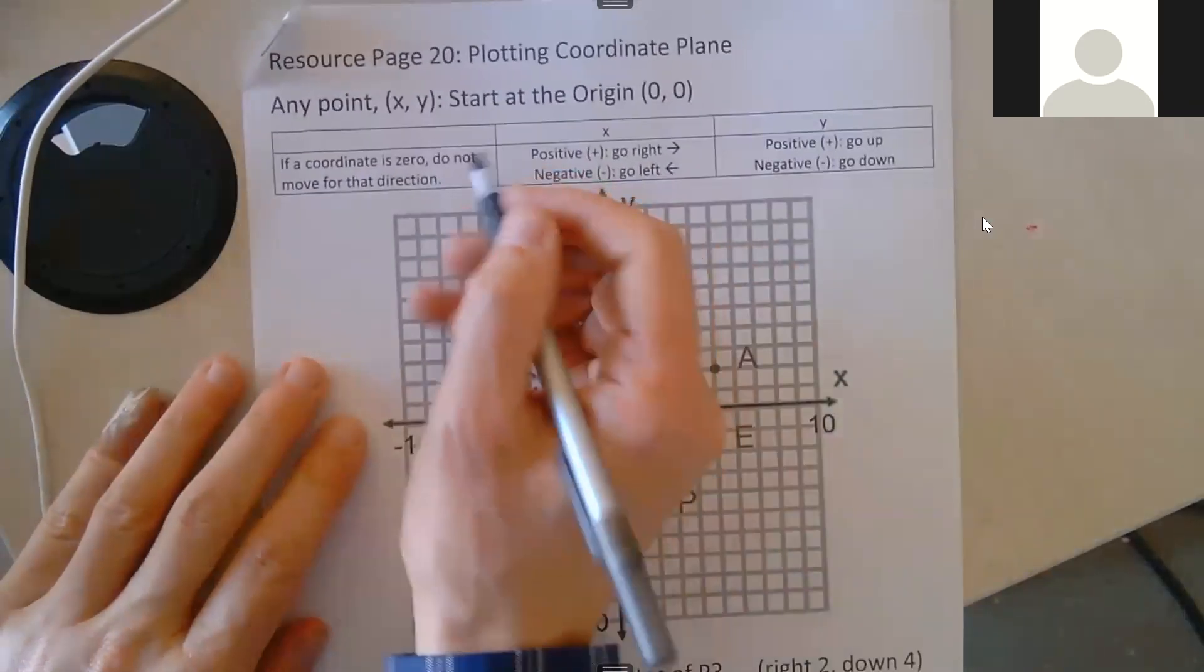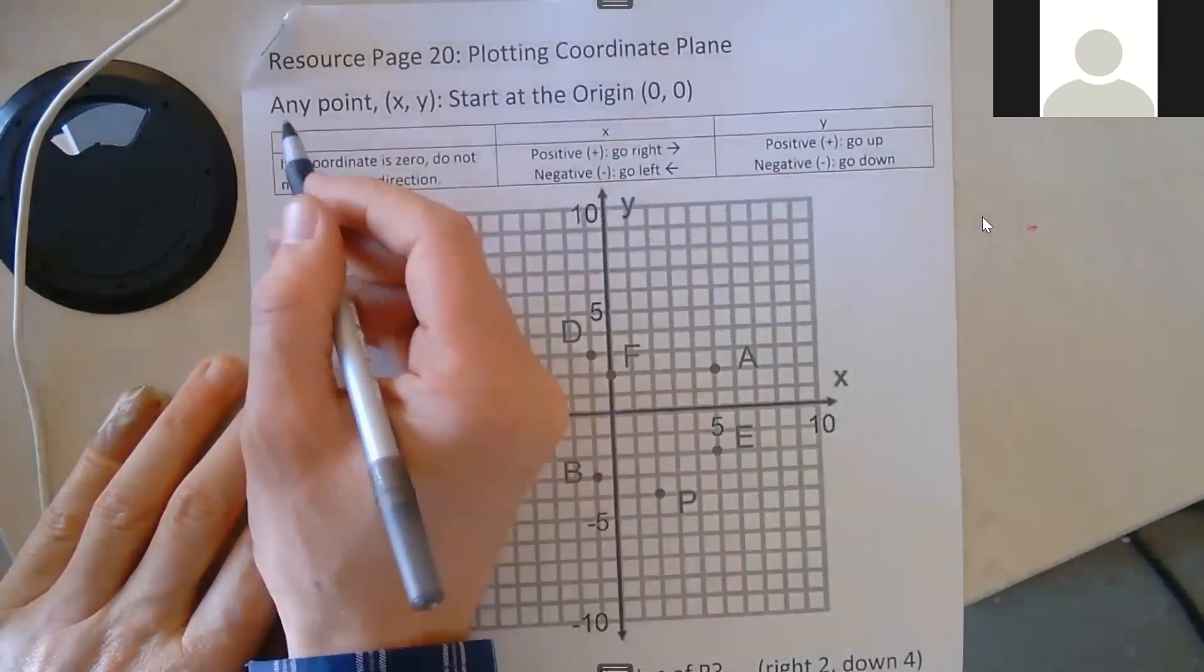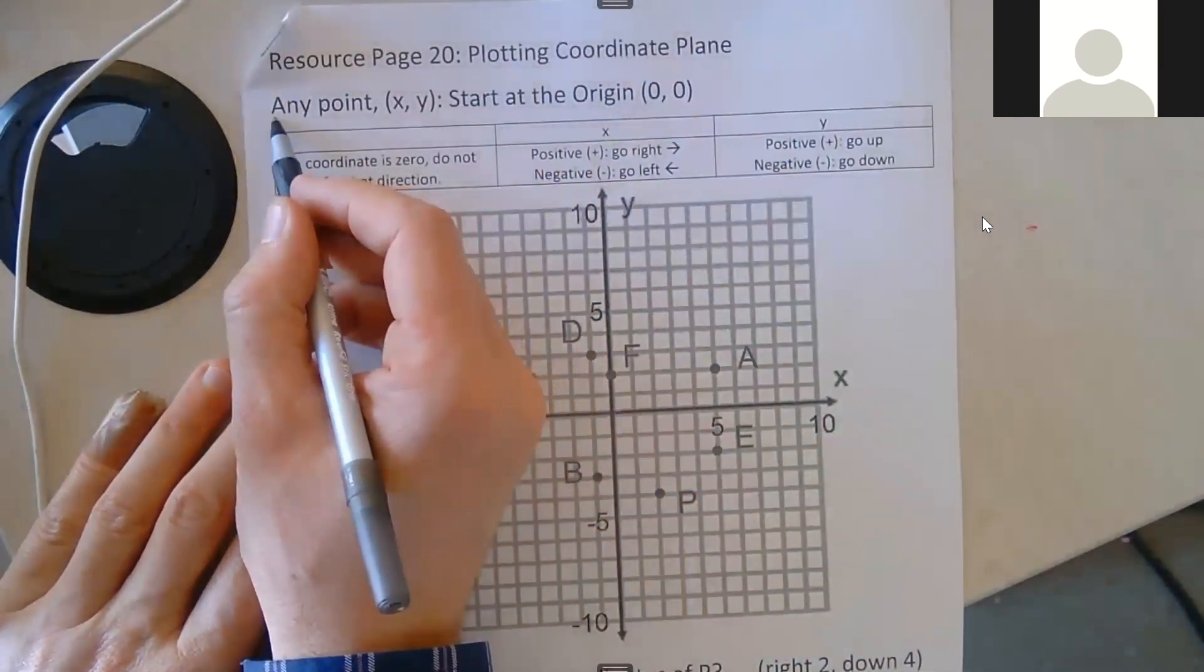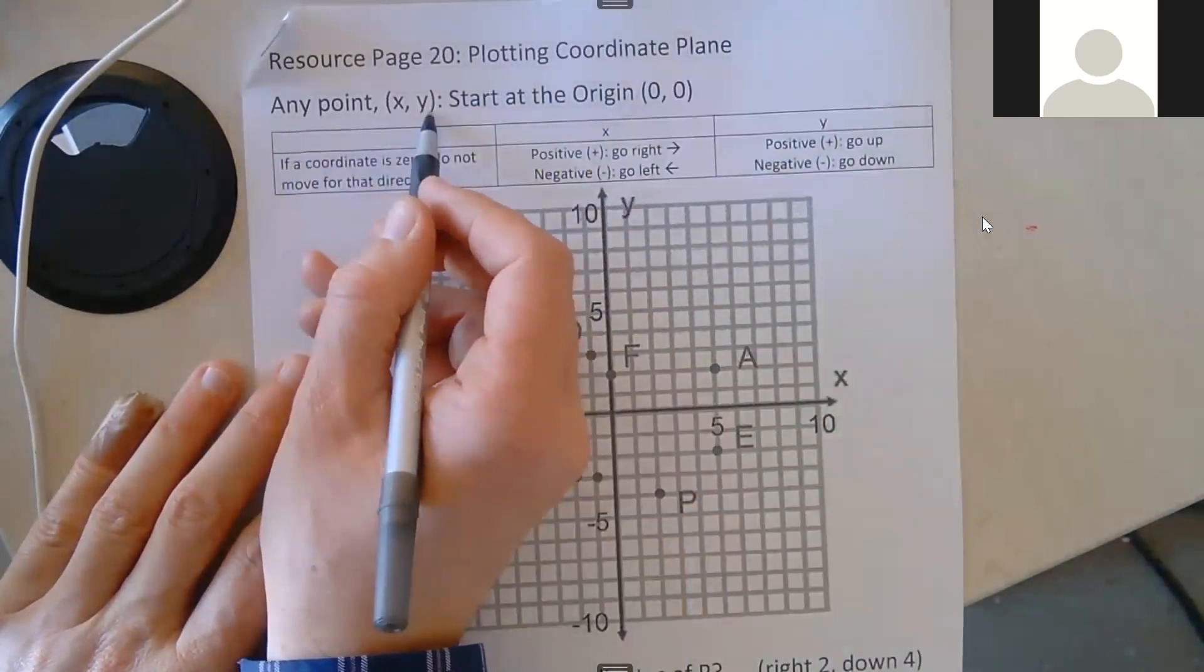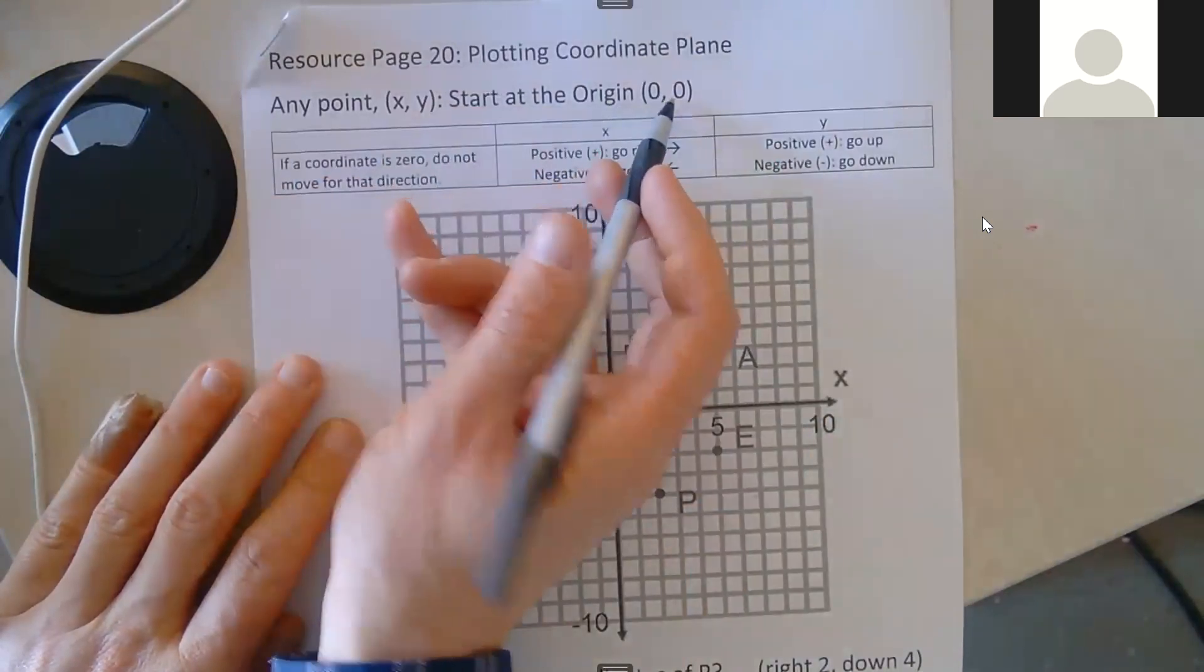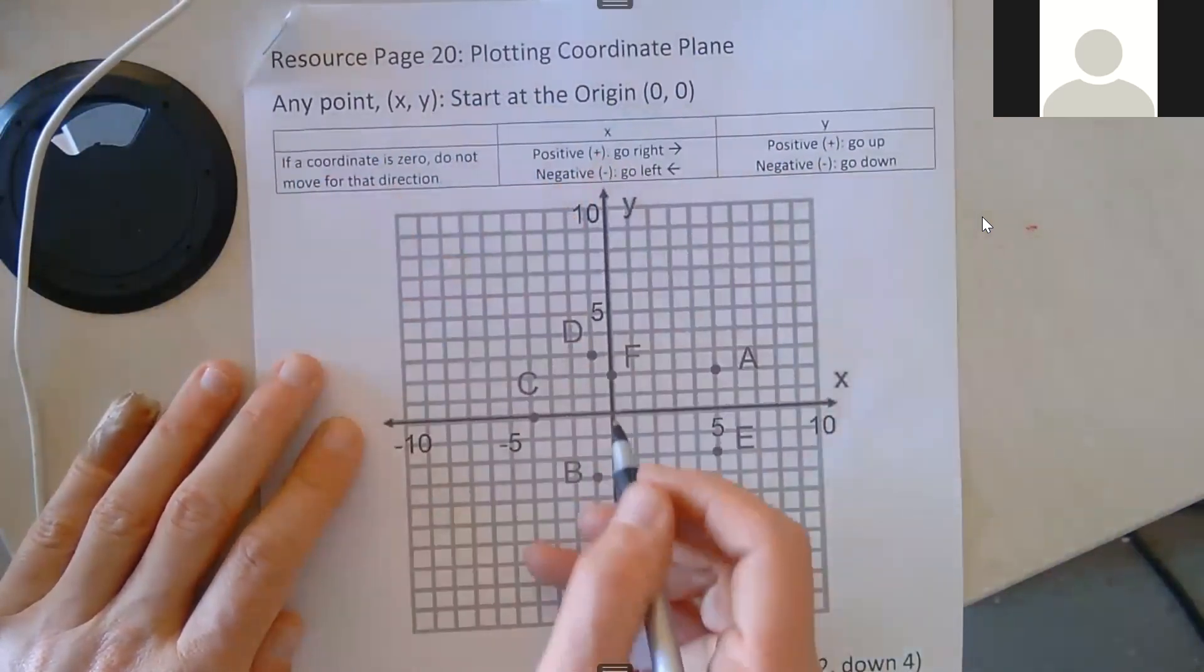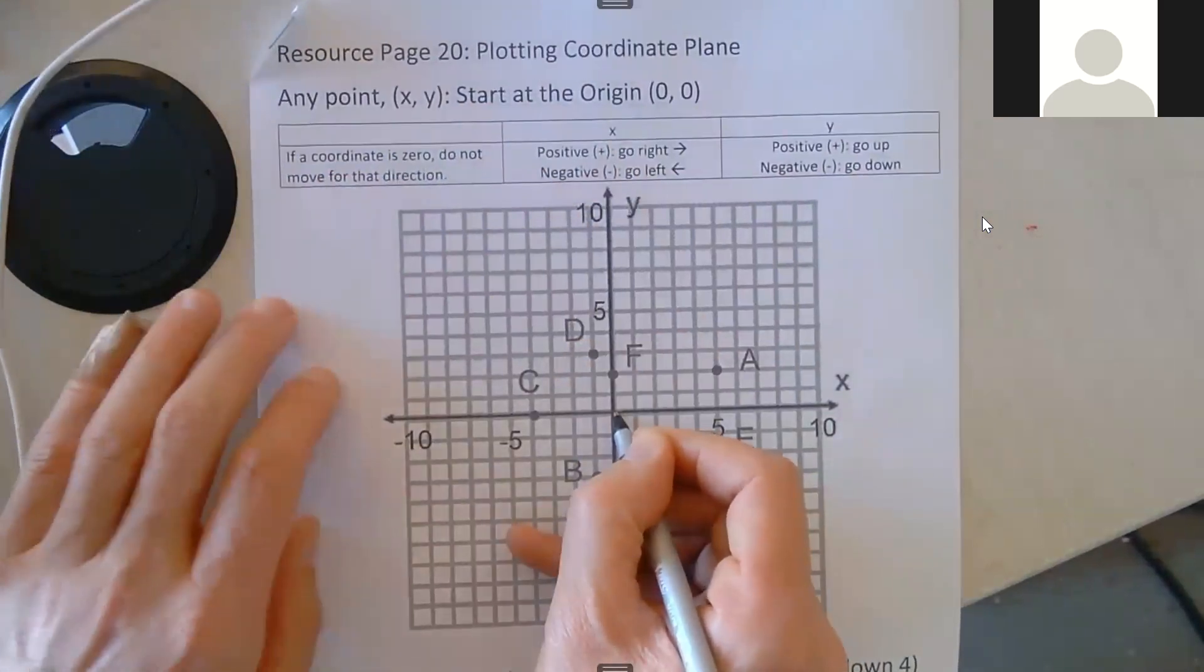So resource page 20, plotting the coordinate plane. Angel, could you start here and read? So what that means is anytime I start counting, I'm going to start at the origin and then count. Okay?